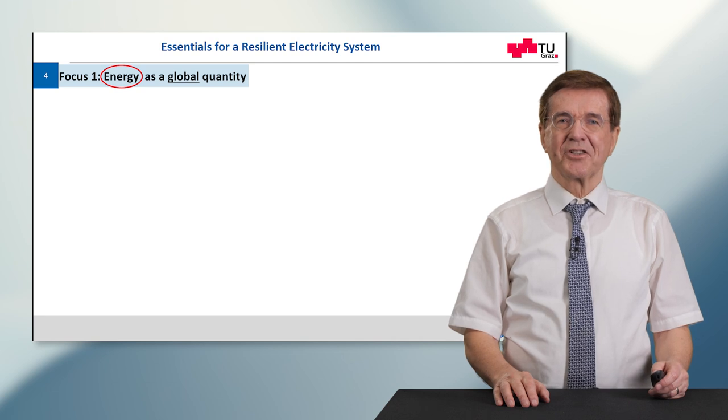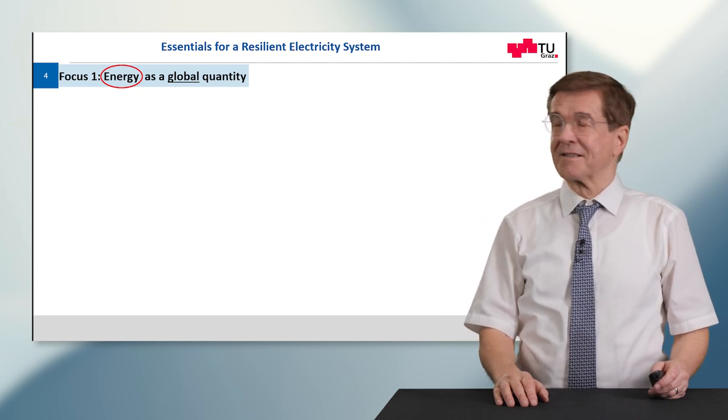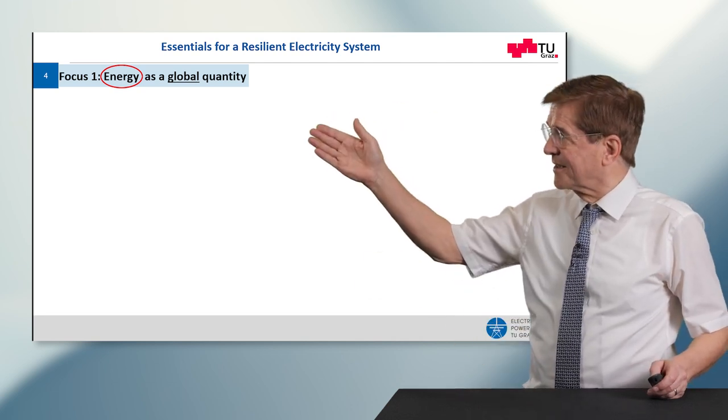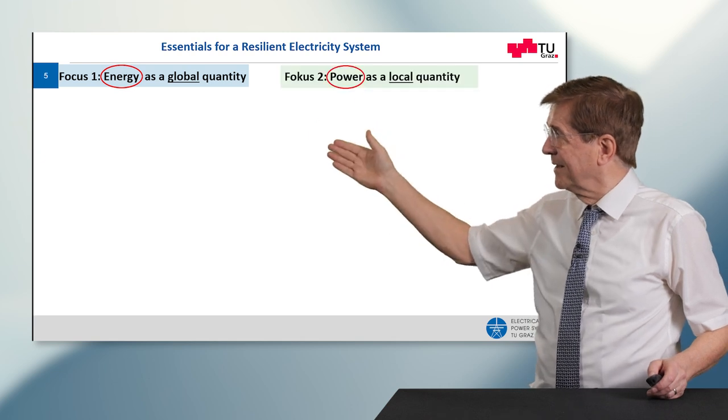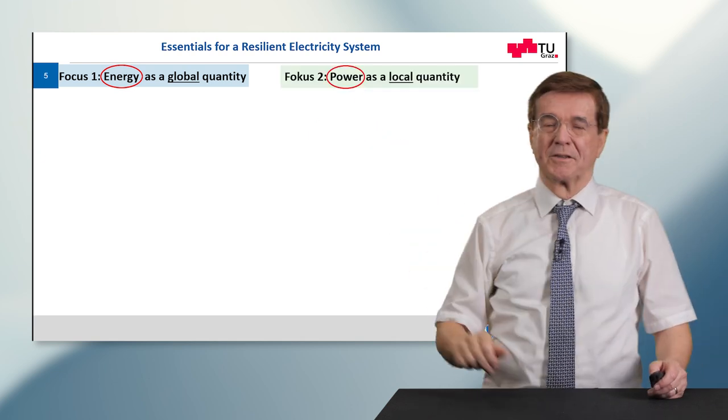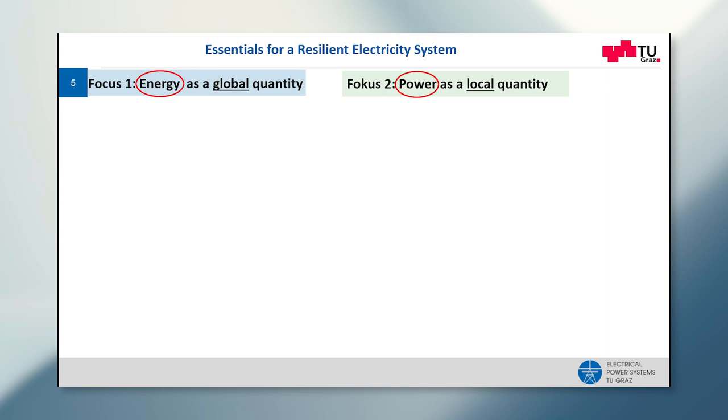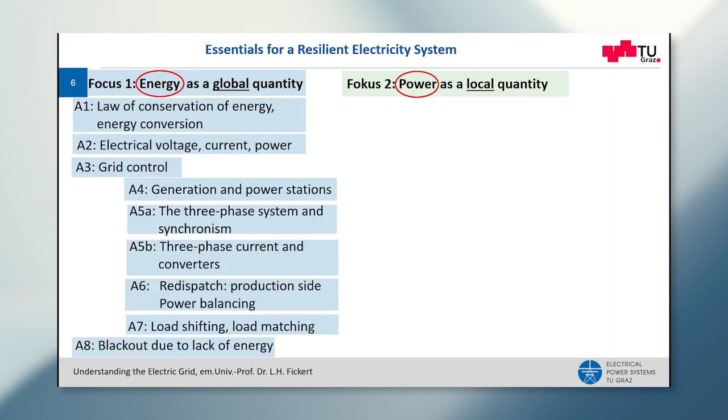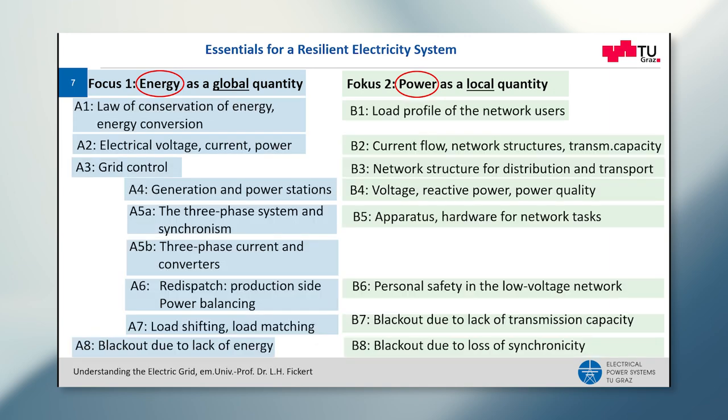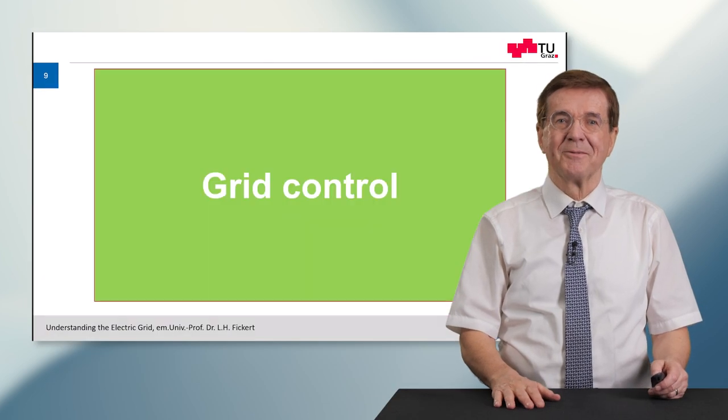The essentials for a resilient electrical system are the energy as global quantity and the power as local quantity. For the sake of completeness, I show you the full content of my course, but today we will concentrate on grid control. So let's get started with grid control.